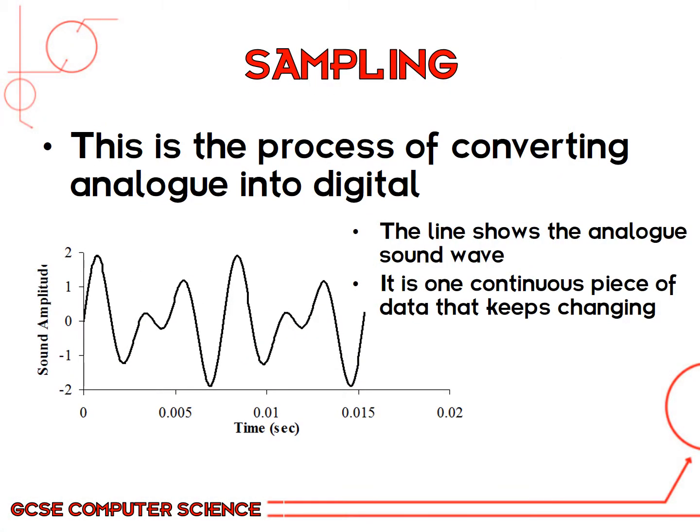This graph shows an analog signal recorded by a microphone. Each change in frequency — the height of the graph — represents changes in air pressure recorded over time. The line shows the analog sound wave as one continuous piece of data that keeps changing. It has a clear start and end and doesn't break at any point.